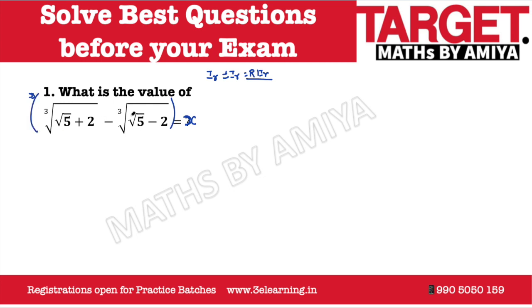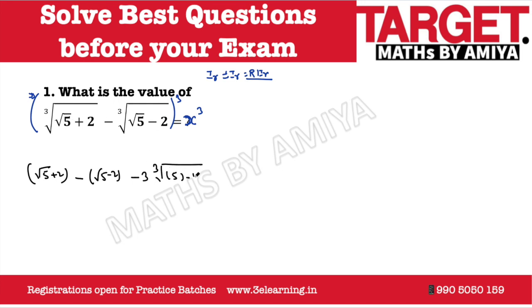Now we need to do cubing on both sides. If you don't know this process or the right approach, you are not able to solve this question. If you do the cubing, we have to cube this number, which is (√5 + 2) minus a³ minus b³, which is (√5 − 2), minus 3 times the third root of (a + b)(a − b), which is a² − b², and the addition of both numbers, which is actually equal to x, what we presumed.